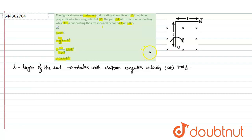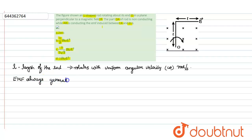We have to calculate the EMF induced between the two ends of the rod. EMF is always generated along the direction of v cross B, where v is the velocity and B is the magnetic field.